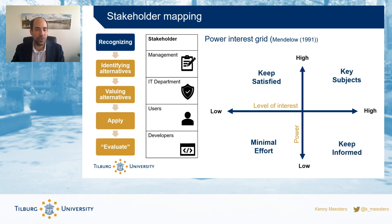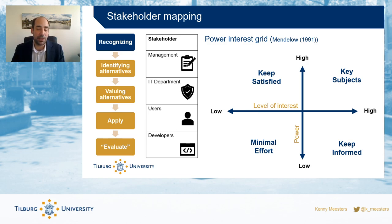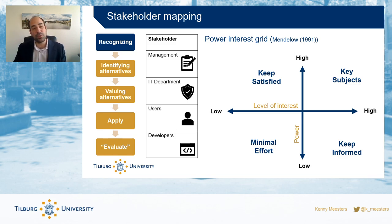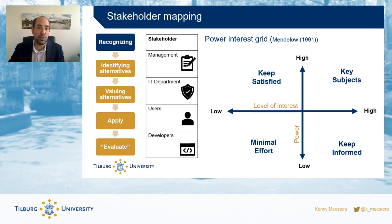Looking at the four quadrants: people with limited power and limited interest — don't spend too much time on them. People with low interest but high decision-making authority — keep them satisfied. For example, those keeping an eye on things and accountable to some extent but not intrinsically motivated to be part of the project. On the other side, people with high interest but limited individual power to influence things — these could be people who want to follow the project or will use your information systems, but are not the ultimate decision makers.